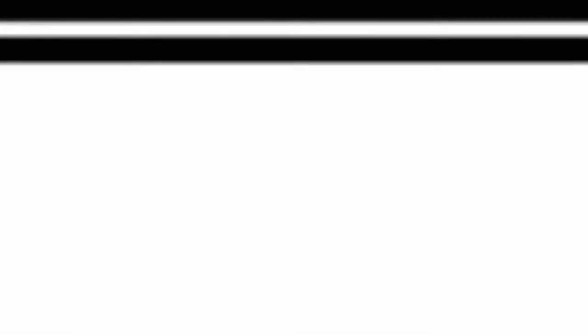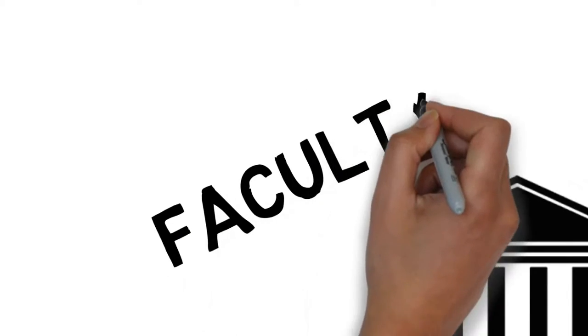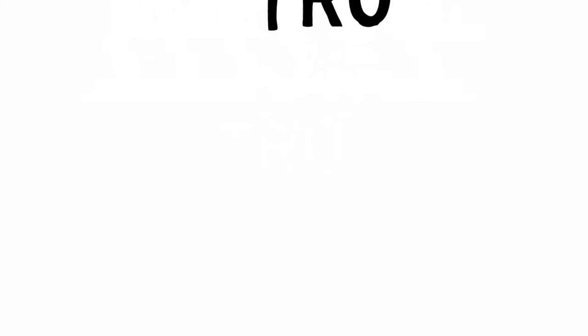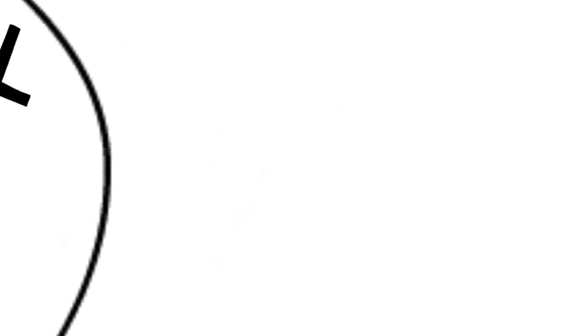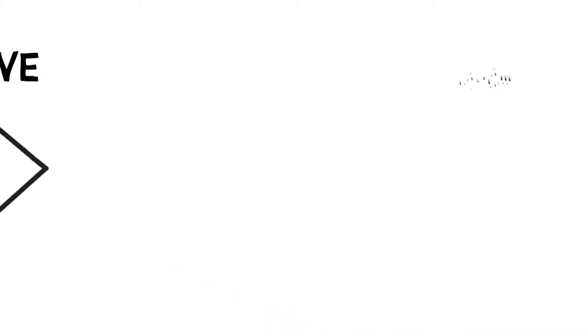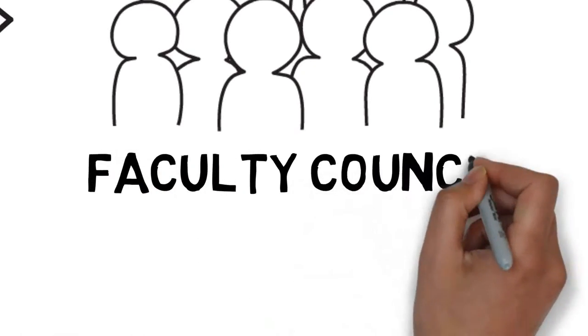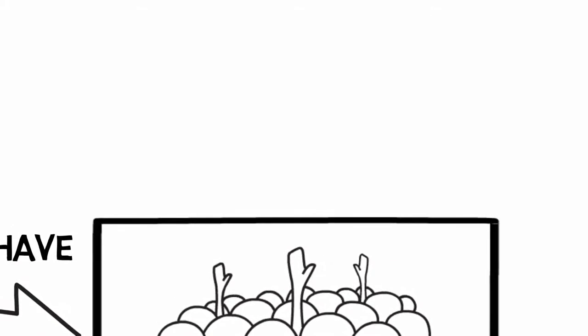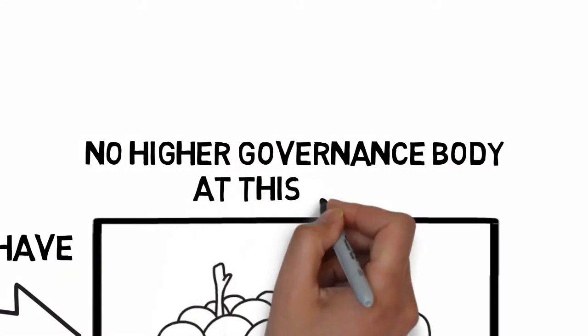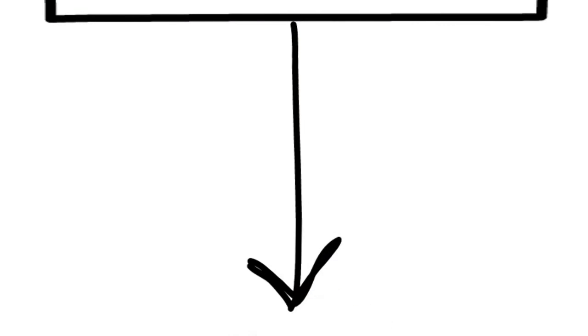Each TRU faculty, school or division is considered an academic unit and as such is required to have a council. Faculty councils are the senior academic governance body of your academic unit and there is no higher governance body at this level. The powers and responsibilities of faculty council are set out in section 40 of the University Act.